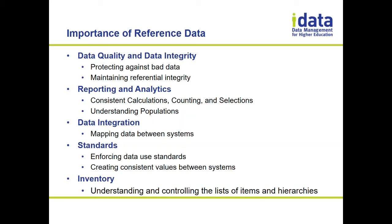So what happens if someone creates a new status called 'batch add' or 'batch reg' because there's a new process where students are registered and they want to track that separately? But you've hard-coded your report to use those original statuses. Your report is going to break. The way you count people, the way you do your population selection — people are falling off reports and falling off population selections. It's just not working.